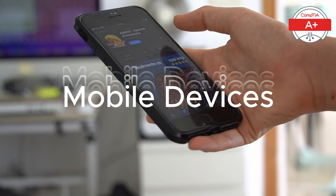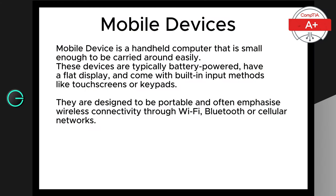So what exactly is a mobile device? A mobile device is a handheld computer that is small enough to be carried around easily. These devices are typically battery powered, have a flat panel display, and come with built-in input methods like touchscreen or keypads. They are designed to be portable and often emphasize wireless connectivity through Wi-Fi, Bluetooth, or cellular networks.